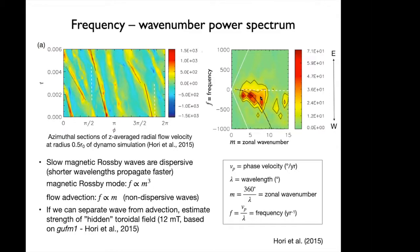By isolating the wave propagation speed at some wavenumber, we can determine the strength of the hidden toroidal field inside the core. Using this calculation on a GFM, Hori et al. arrived at a toroidal field strength of about 12 millitesla, which can be seen as an upper boundary.